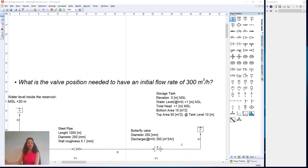Let's assume that we are trying to calculate the valve position needed to ensure a flow rate of 300 cubic meters per hour.